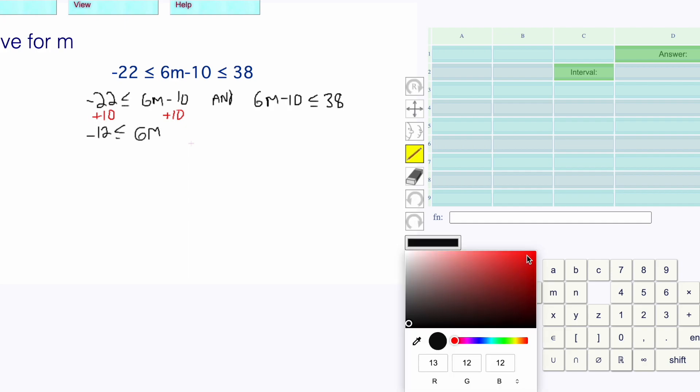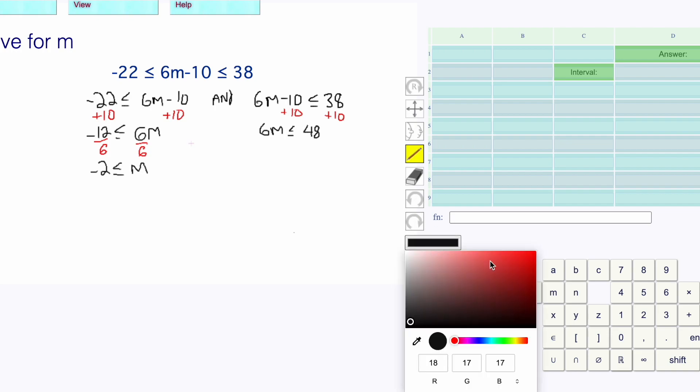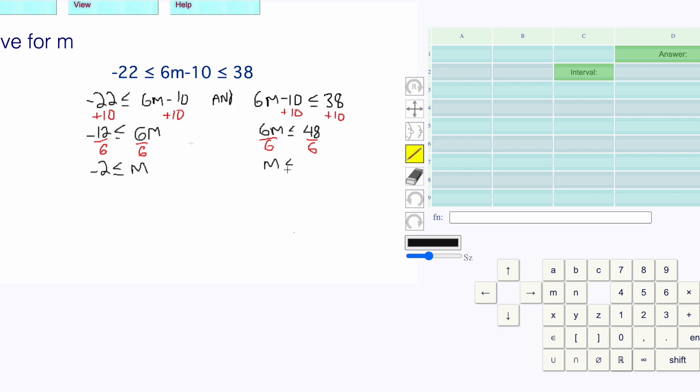I'm going to divide both sides by 6 to get the m alone, and add 10 to both sides over here. We have 6m is less than or equal to 48. Then we're going to divide both sides by 6. That gives us m is less than or equal to 8. This works like an and, it's intersection.